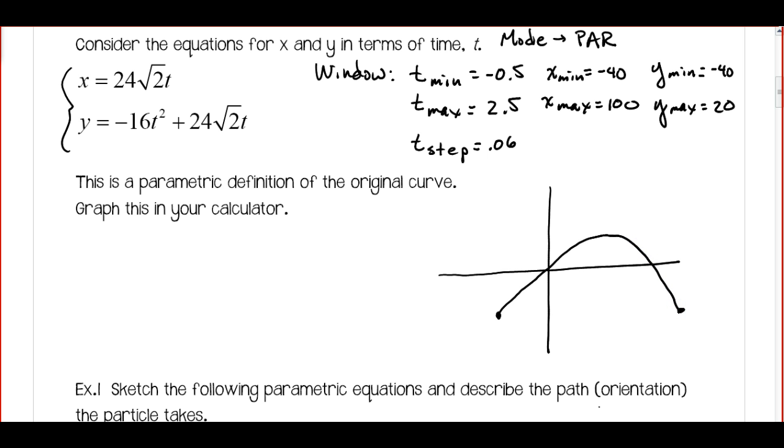It should look rather parabolic. And if you notice, we only have this section of the graph, and it graphed it out in this direction. Again, these little arrows on the graph tell us how the x and y positions are progressing over time. So you're going to need to put that arrow that shows the direction on your graph.